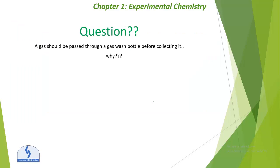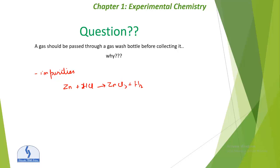The question arises: why should a gas be passed through a gas wash bottle before collecting it? There are two main reasons. Reason one: the gas may contain impurities which will dissolve in water. For example, traces of HCl may be present when hydrogen gas is made by reacting zinc with dilute HCl: Zn + HCl → ZnCl₂ + H₂. Note that HCl and ammonia are both soluble in water, so care must be taken.